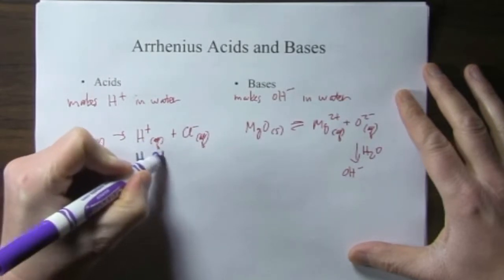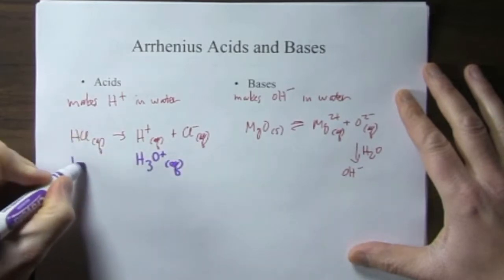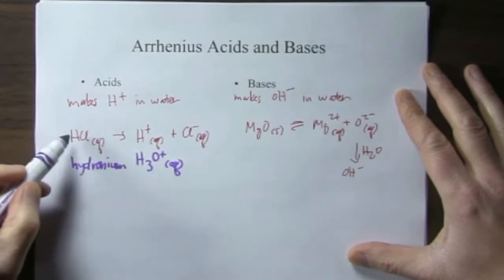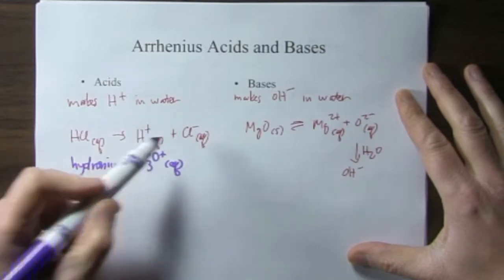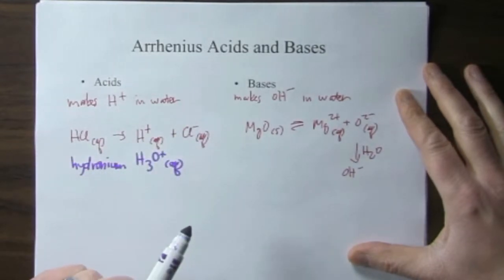That proton doesn't exist by itself. But here's an example: if we put hydrochloric acid in water, it dissociates into hydrogen ions and chloride ions, or hydronium ions and chloride ions.